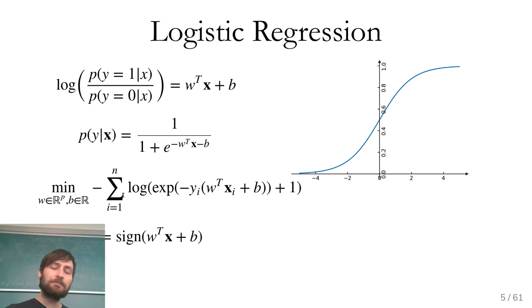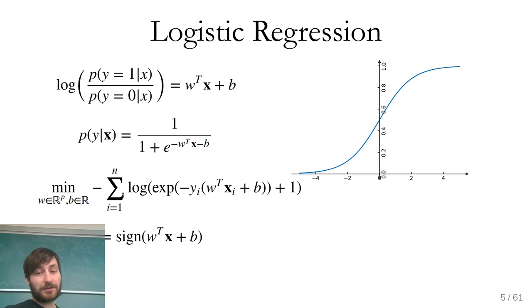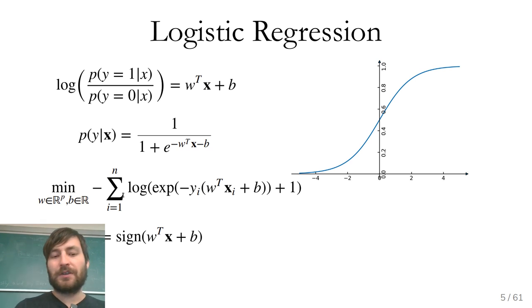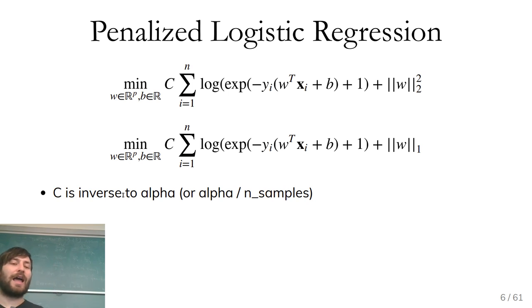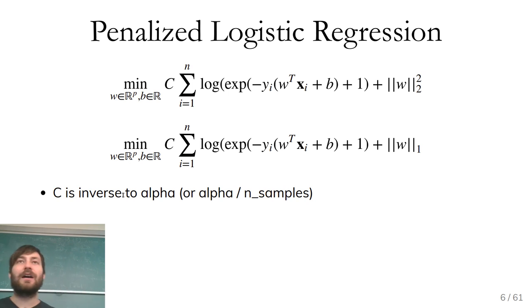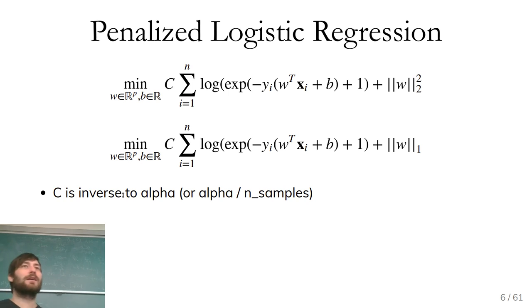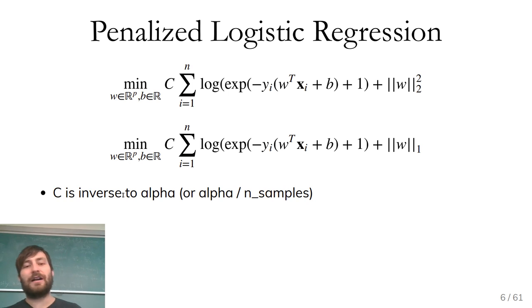This is plain logistic regression — only the data fitting term. Now we can also add a regularizer to make our model more simple, the same way we did for Ridge and Lasso. We can add an L2 regularizer or an L1 regularizer. Both will make the coefficients be smaller, where the L1 norm also means some of them will be exactly zero.